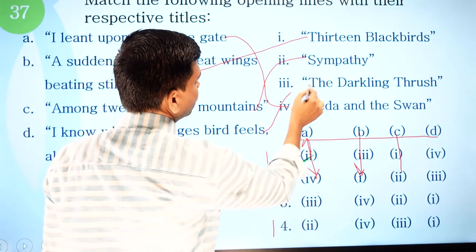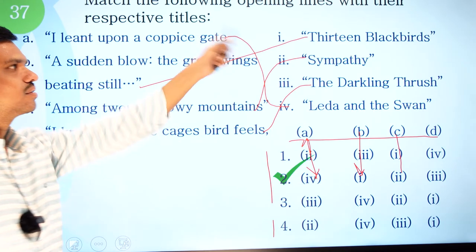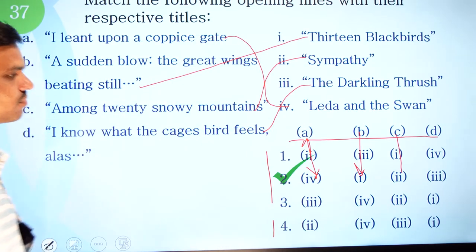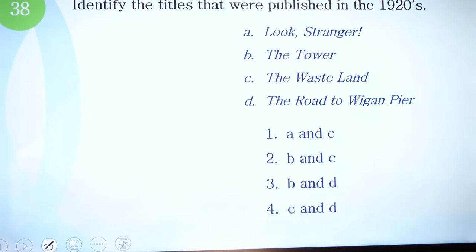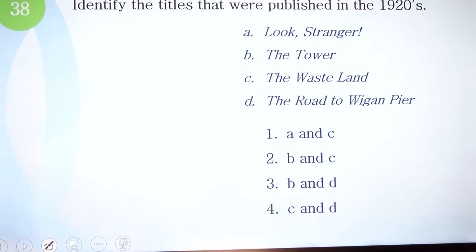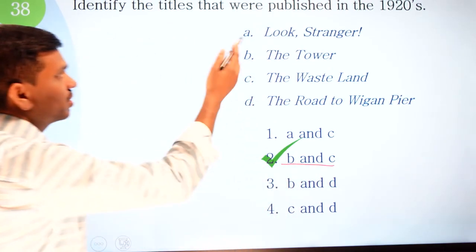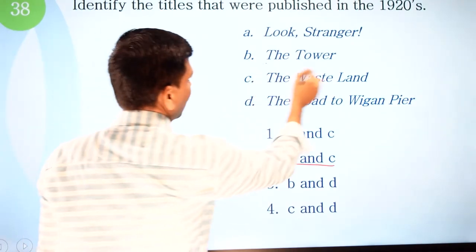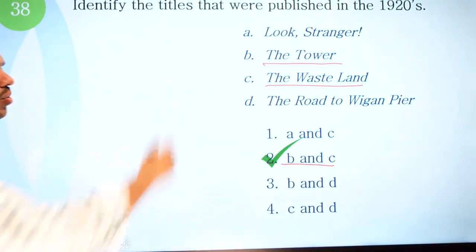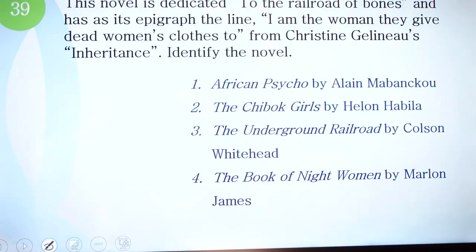Question 38: identify the titles that were published in the 1920s. The four titles are: A) Look, Stranger!; B) The Tower; C) The Waste Land; D) The Road to Wigan Pier. The correct option is B and C — The Tower by Yeats and The Waste Land by T.S. Eliot — both very influential works published in the 1920s.